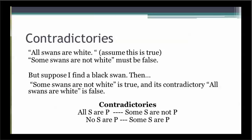Suppose I make the claim 'all swans are white' is true. But then you discover a black swan — they do actually exist. First, you have found a contradiction to my A claim. If the O claim, 'some swans are not white,' is true, then my A claim, 'all swans are white,' must be false. Sometimes this is referred to as refuting an argument by counterexample.